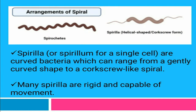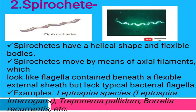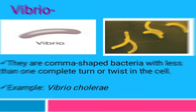For the arrangement of spirilla — spirilla are spiral or curved-shaped bacteria. The first arrangement is spirillum: it has a rigid spiral structure, no outer sheath, and moves using an endoflagella. Examples are Campylobacter jejuni, Helicobacter pylori, and Spirillum vulgare. The next is spirochete: spirochetes have a helical shape and a flexible body. They move through an axial filament, which is a type of flagella but not a bacterial flagella. Examples are Leptospira species and Borrelia recurrentis.